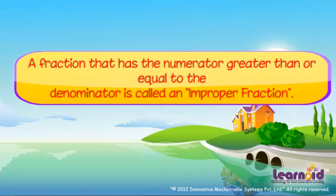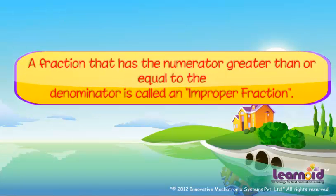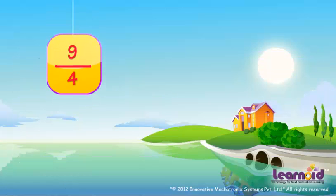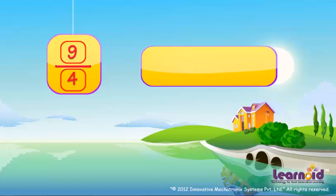A fraction whose numerator is greater than or equal to the denominator is called an improper fraction. For example, 9 by 4 is an improper fraction because the numerator is greater than the denominator.